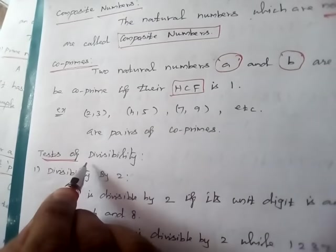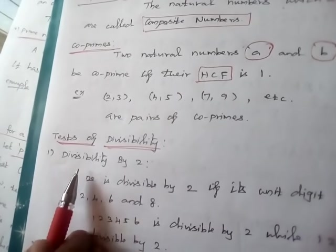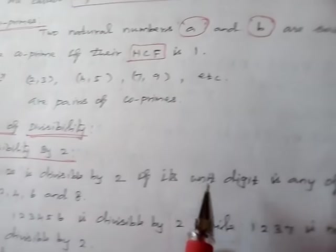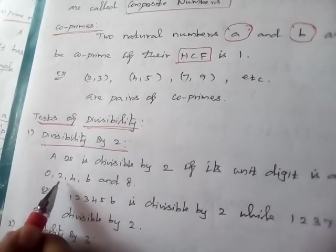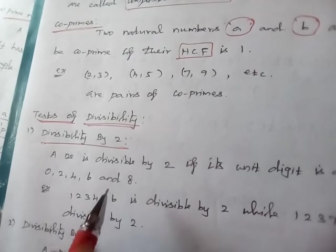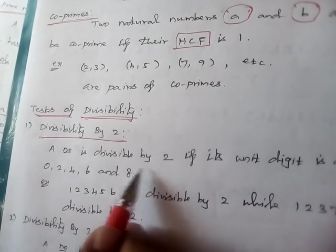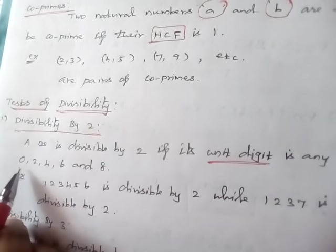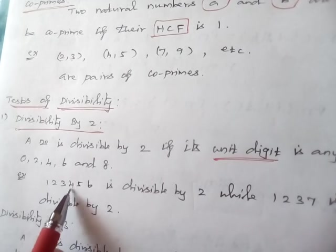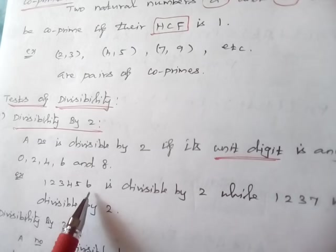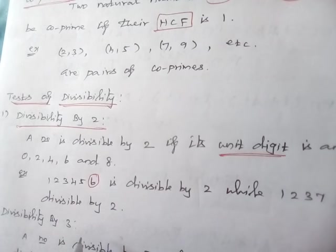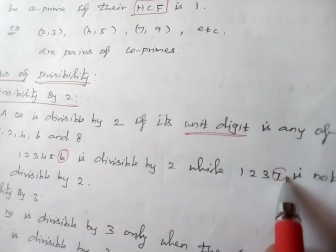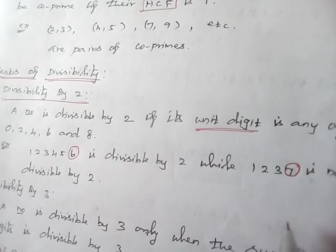Now, the test of divisibility. Divisibility by 2: a number is divisible by 2 if its unit digit is any of 0, 2, 4, 6, and 8. For example, 123456 is exactly divisible by 2 because its unit digit is 6, and 6 is divisible by 2. But 1237 is not divisible by 2 because its unit digit is 7, and 7 is not divisible by 2.